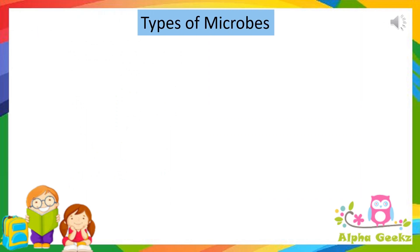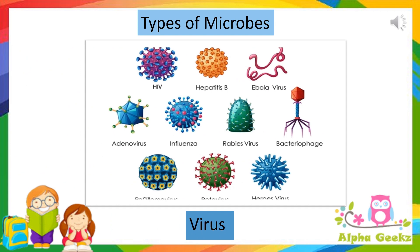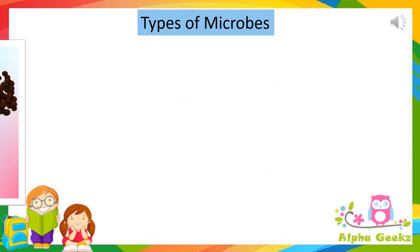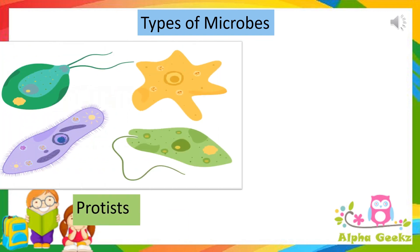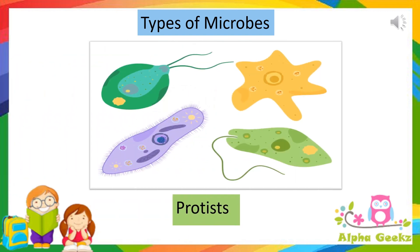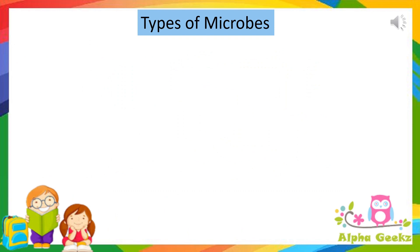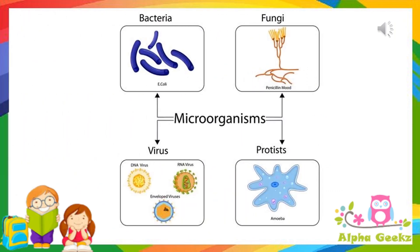Now what are the types of microbes that exist? There are mainly four types of microbes: bacteria, virus, fungi and protist or protozoa. Now let's explore the features of each microorganism and the illnesses they can trigger in humans.